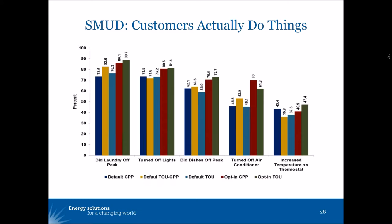The first key takeaway is that putting customers on a time of use rate changed the behavior of a pretty high number of customers. Three-fourths of them did laundry off-peak and turned off lights. A slightly lower percentage did dishes off-peak or turned off their air conditioner. Some adjusted the temperature on their thermostat. This was true whether they were defaulted onto a critical peak pricing plan or time of use plan or whether they opted in.